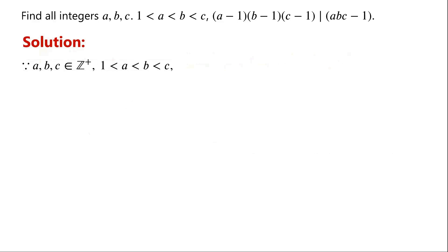Because a, b, and c are positive integers and 1 < a < b < c, so a must be greater than or equal to 2, b must be greater than or equal to 3, and c must be greater than or equal to 4.